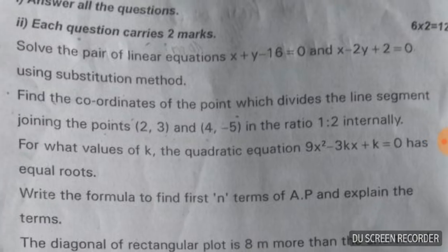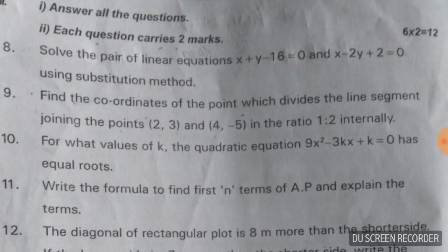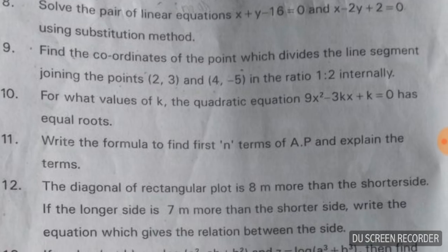Find the coordinates of the point which divides the line segment joining the points (2, 3) and (4, -5) in the ratio 1:2 internally. Use the section formula: [(mx₂ + nx₁)/(m+n), (my₂ + ny₁)/(m+n)]. Substitute m = 1, n = 2, x₁ = 2, x₂ = 4, y₁ = 3, y₂ = -5.